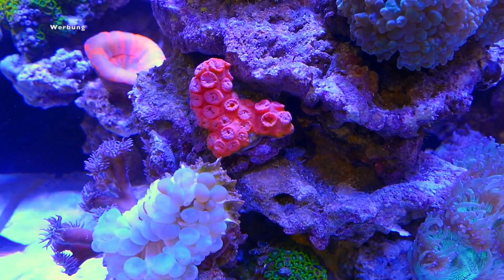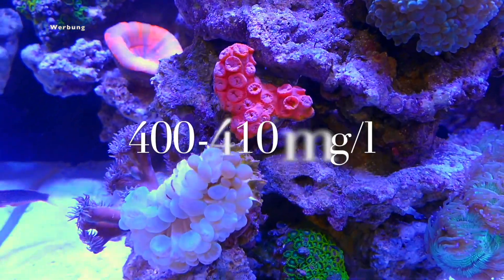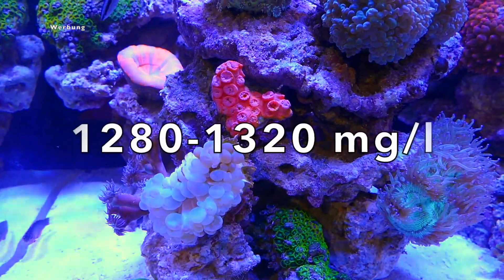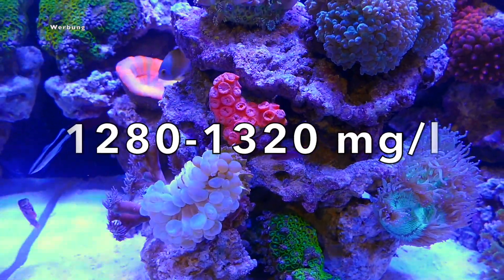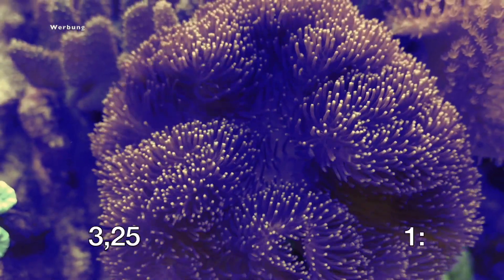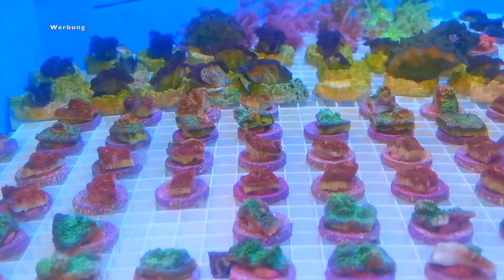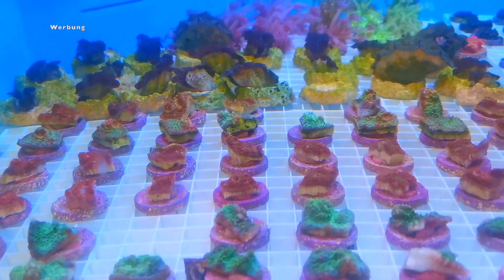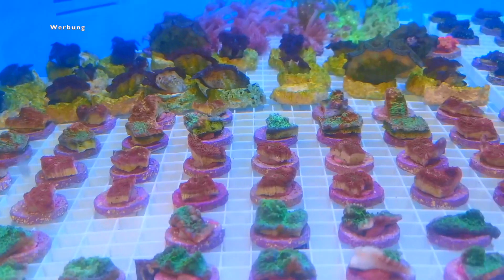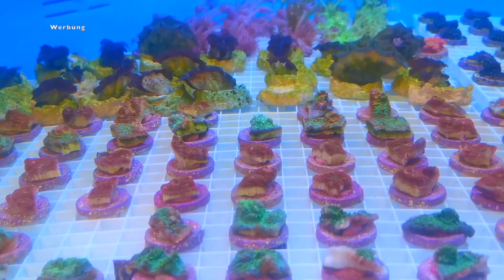In natural seawater, the calcium content is 400 to 410 milligrams per liter, and the magnesium content is 1280 to 1320 milligrams per liter in a fixed ratio of 1 to 3.25 to each other. Due to chemical and biochemical interactions between calcium and magnesium, this concentration ratio should also be aimed for in salt water aquariums.